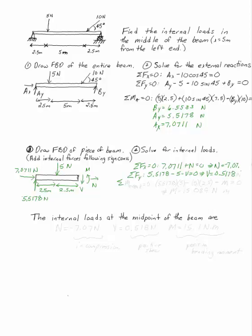And if I take the sum of the moments about the break, I get 5.5178 acting at a distance of 5 meters, minus 5 acting at a distance of 2.5 meters because those act in opposite directions, and minus M, that's my internal moment. I can solve that to get M is equal to 15.089 newton meters.